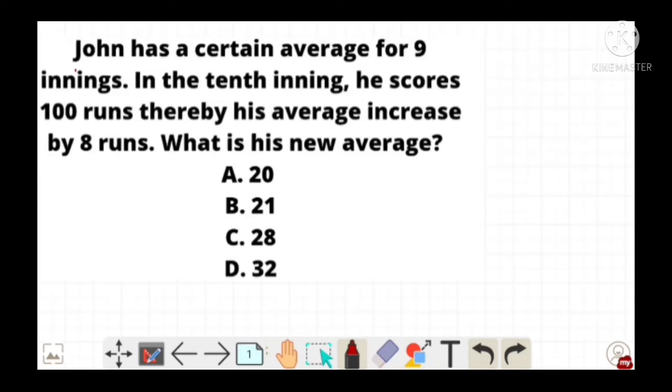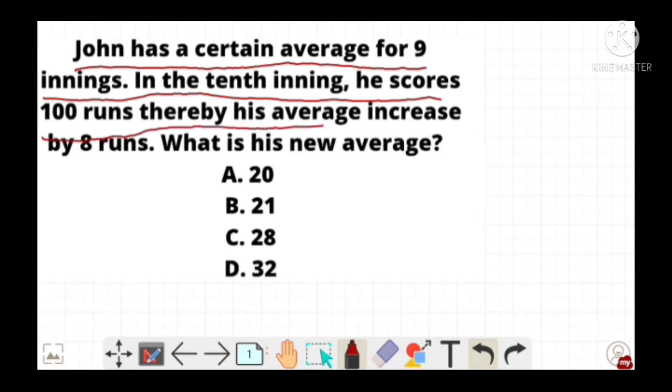Hello everybody, today we have a question: John has a certain average for nine innings. In the tenth inning, he scores 100 runs, thereby his average increases by 8 runs. What is his new average?